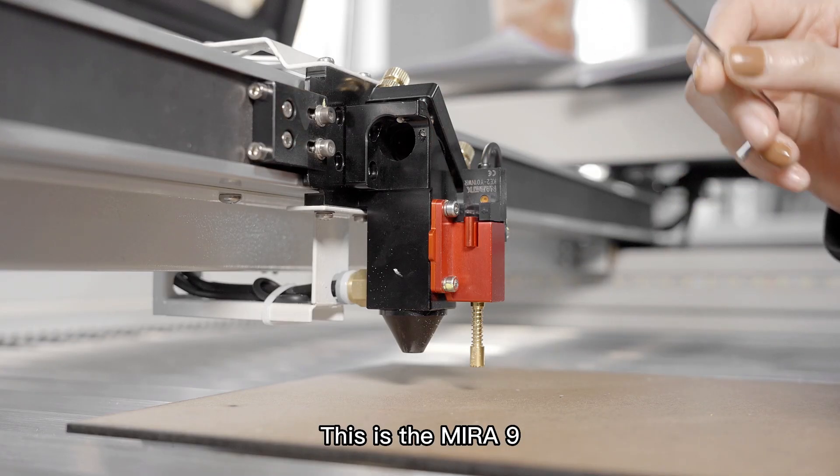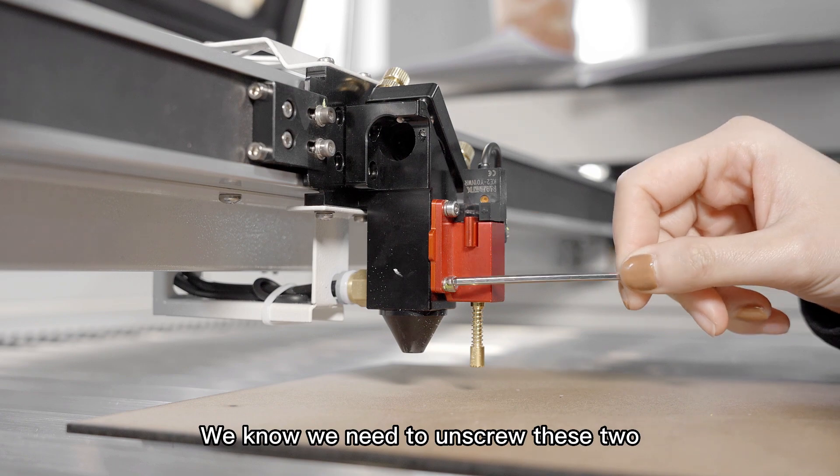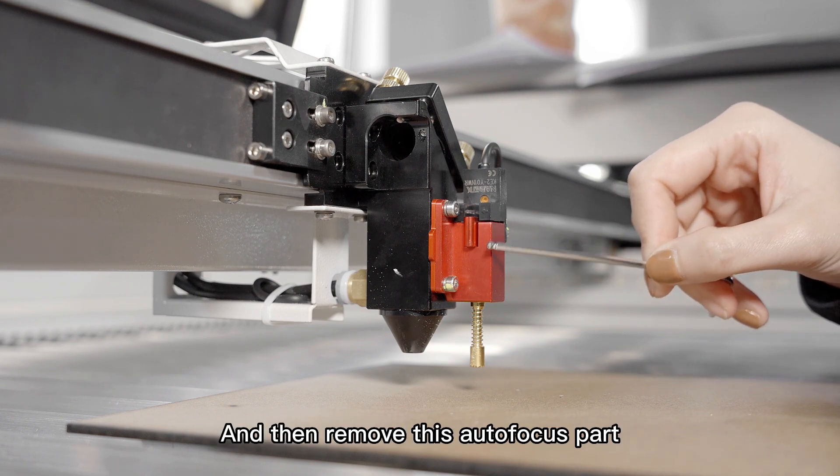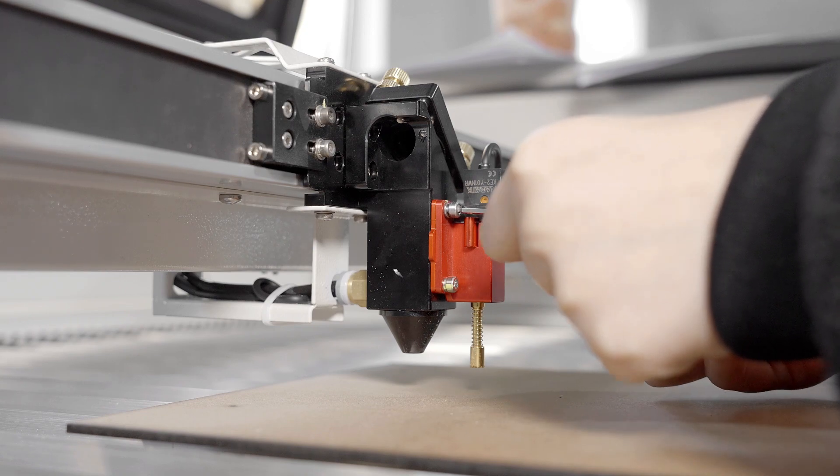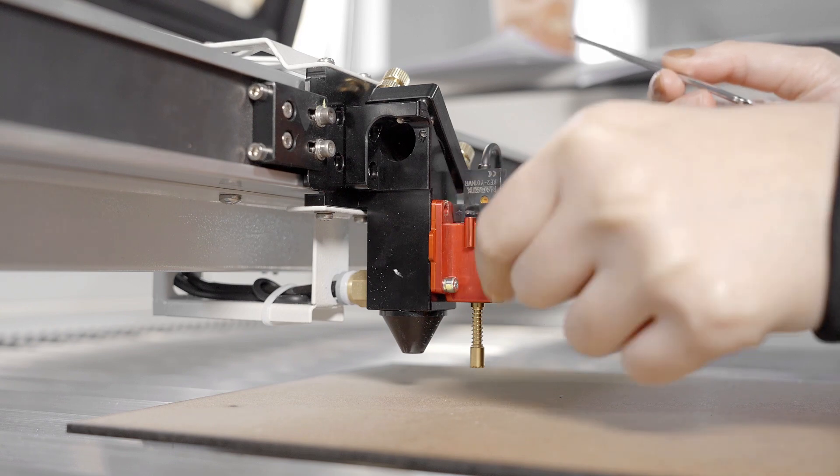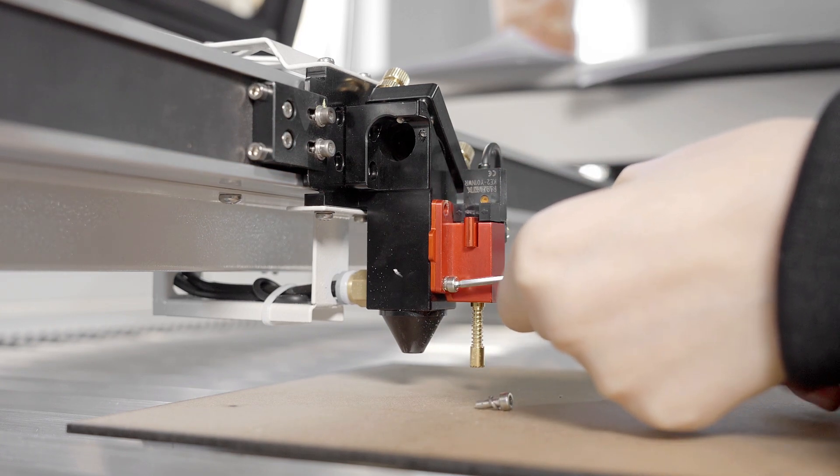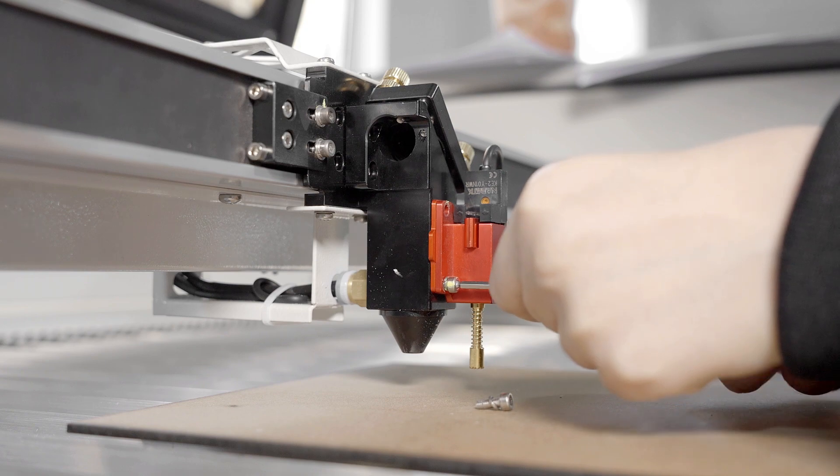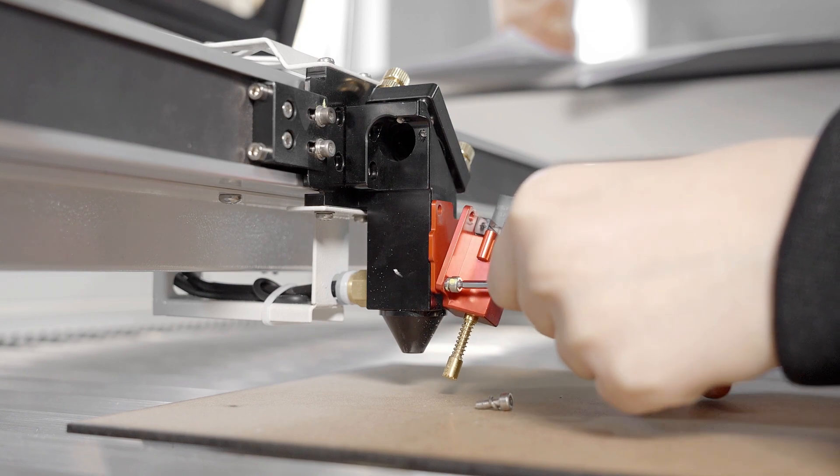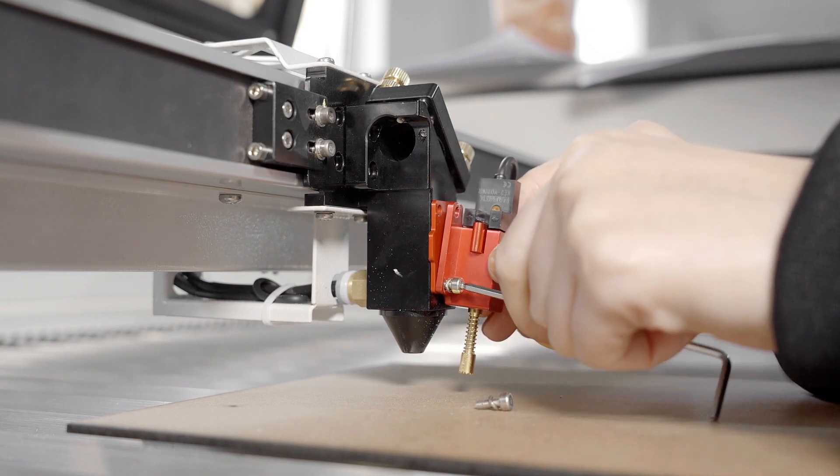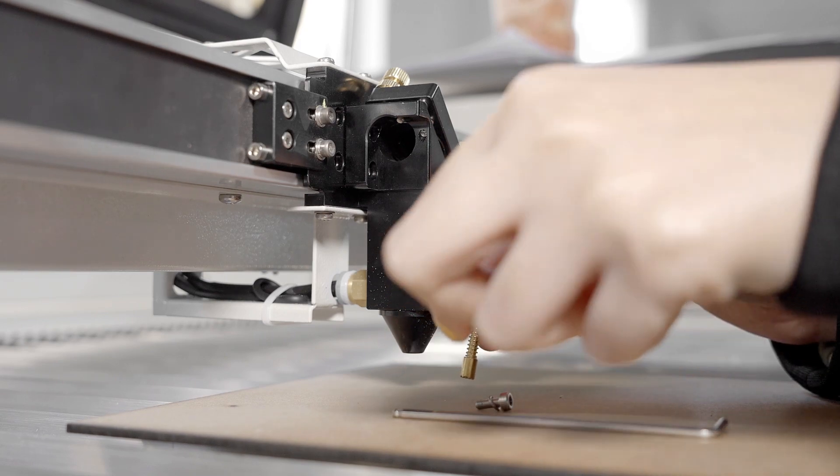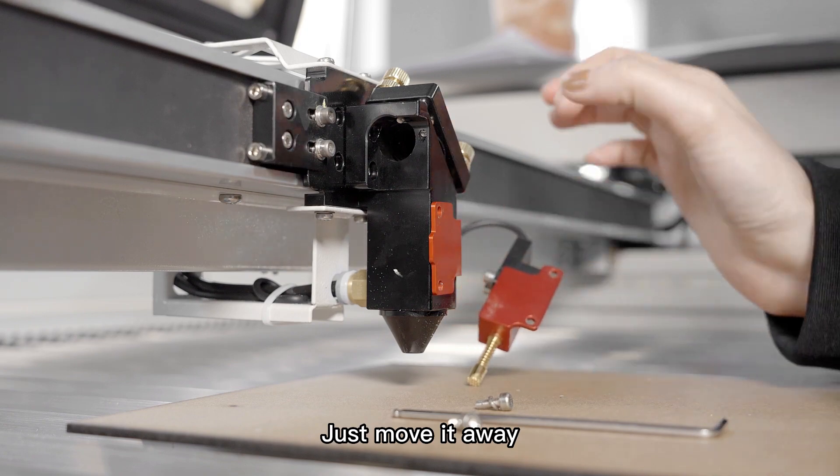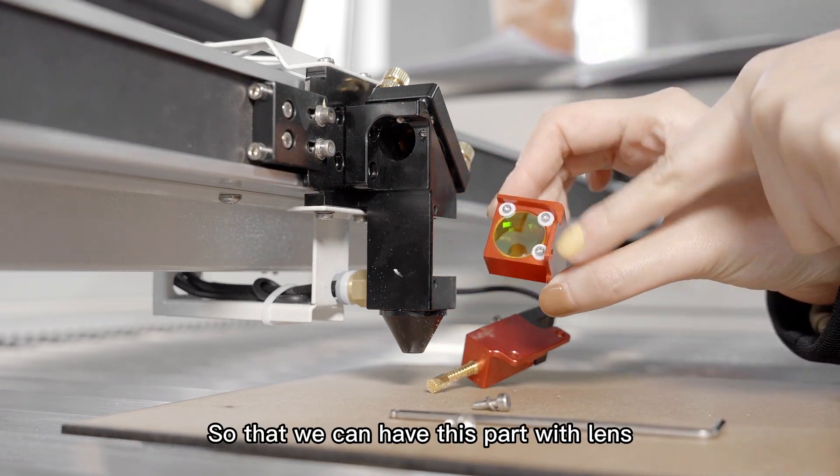This is the mirror 9, and from last episode, we know we need to outscrew these two and then remove this autofocus part. Just move it away so that we can have this part with lens.